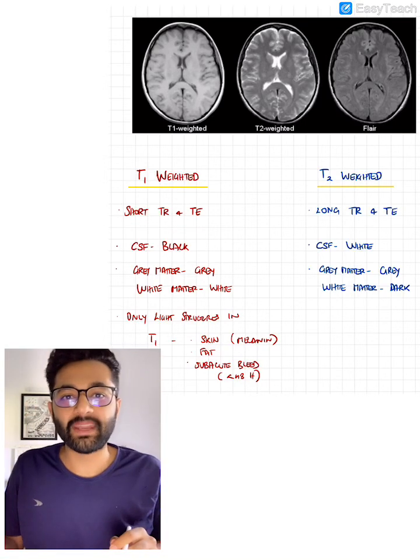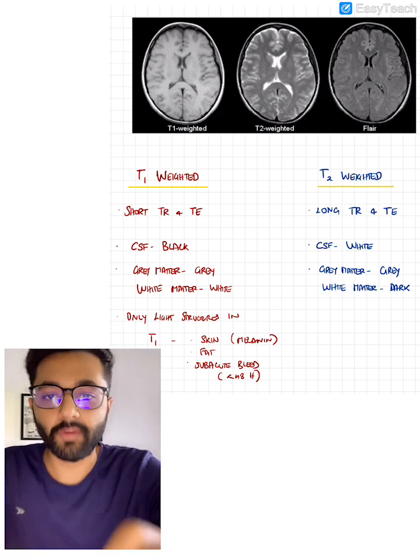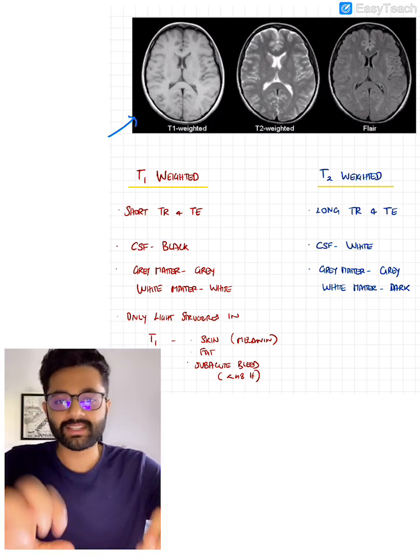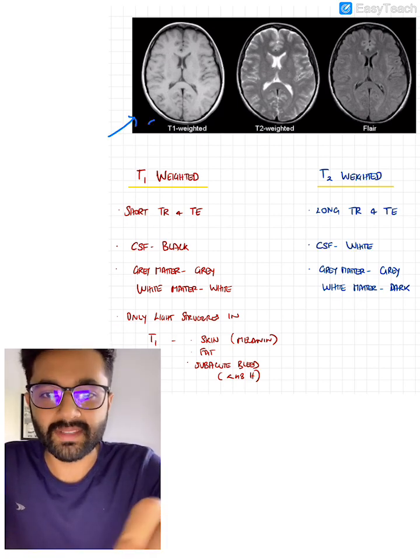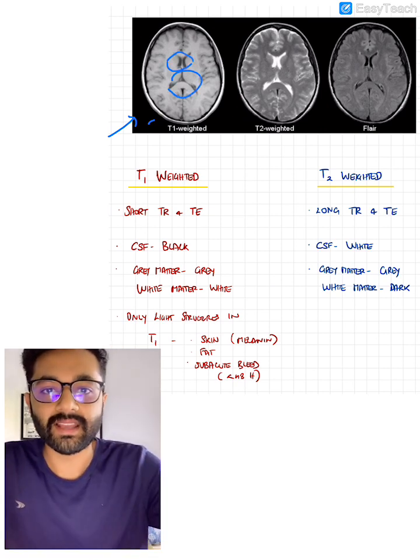In this video, I'm going to tell you how to differentiate between a T1 weighted image and a T2 weighted image of an MRI in under one minute. Before we talk about T1 and T2 weighted images, let's look at this image. Here we see the scalp, the skull, the brain, and these CSF filled spaces called the ventricles.